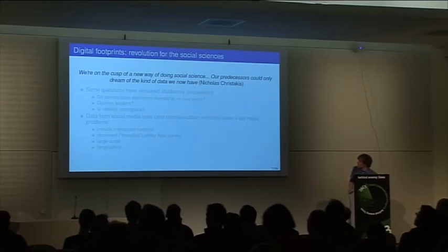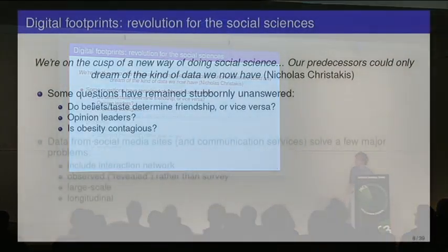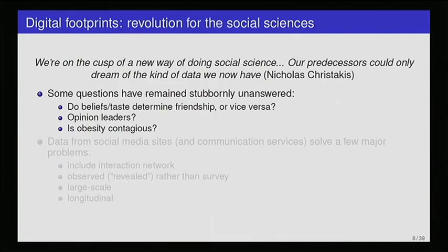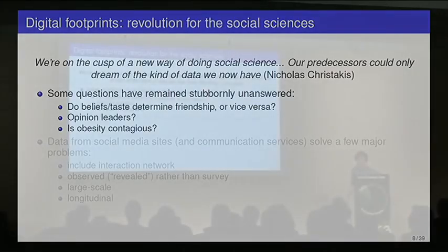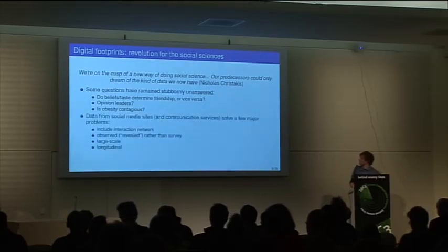A sociologist at Harvard said, we're on the cusp of a new way of doing social science. Our predecessors could only dream of the kind of data we have now. There are stubborn questions that sociologists haven't been able to answer, such as do tastes or beliefs determine who you become friends with, or is it the other way around? Do our friends influence us and determine our taste? Are there opinion leaders responsible for convincing people around them of what they should think? And there are many other questions about contagion and diffusion in social networks, such as is obesity contagious? These questions are increasingly not only studied by sociologists but also physicists and computer scientists.